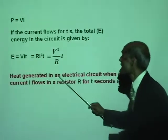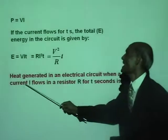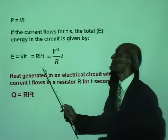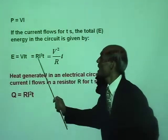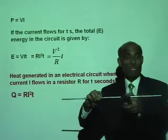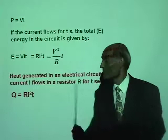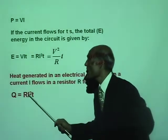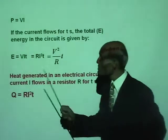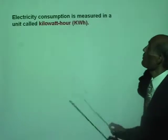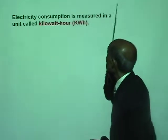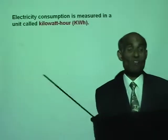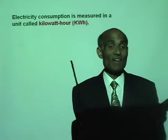Heat generated in an electrical circuit: when a current I flows in a resistor R for t seconds, the quantity of heat generated is Q equals RI squared t. If all the energy gets converted to heat, then the heat generated in a time t is RI squared t. These are very useful equations.